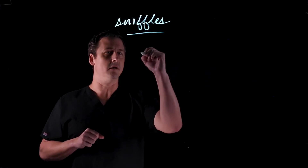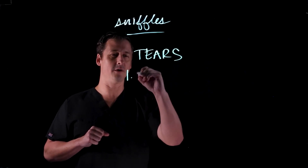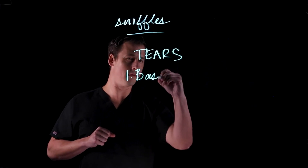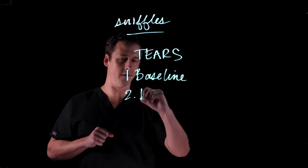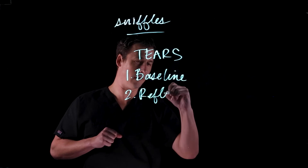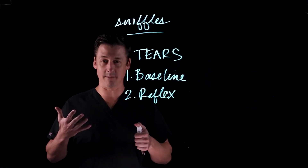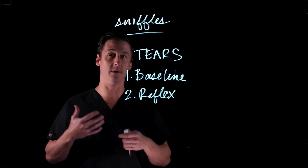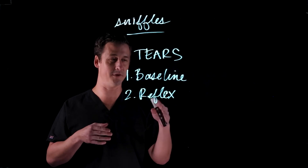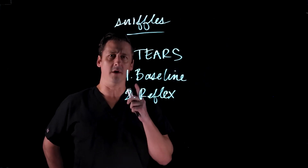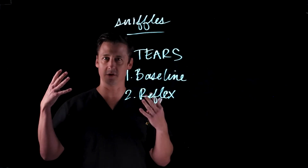When we talk about tears, there are two types: your baseline tears and then there are reflex tears. Reflex tearing is what people mean when they say 'that guy's really crying over there' — you wouldn't be talking about his baseline tears, you'd be talking about reflex tearing. Baseline tears are different; they are what keep the surface of your eye nice and smooth and polished all the time.